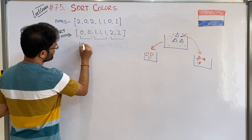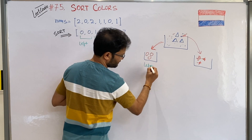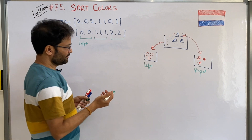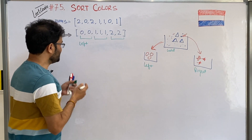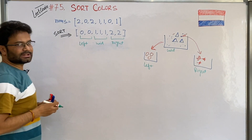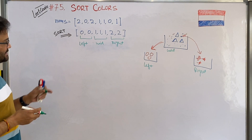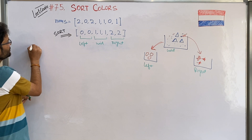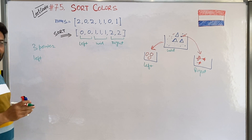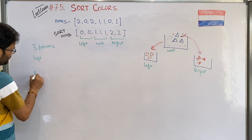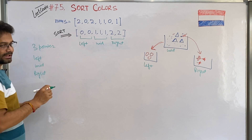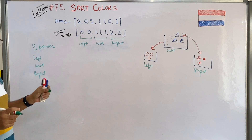One bucket is the left side, one bucket is the right side, and the middle bucket is just a container. If you want to give it a name, you can call it the middle. The same thing we are doing here: left, middle, and right. This algorithm is completely based upon this strategy. We will use 3 pointers to solve this problem: one left pointer takes care of the smallest number, one right pointer takes care of the highest number, and one mid pointer chooses items and throws them either left or right.